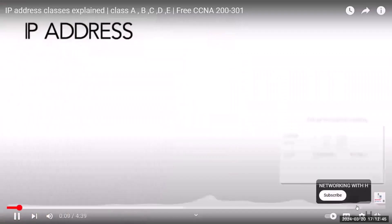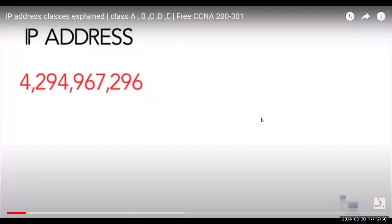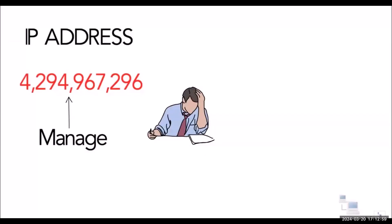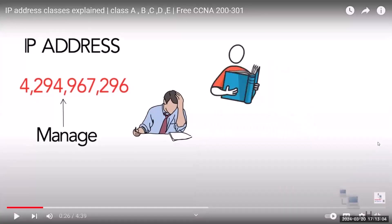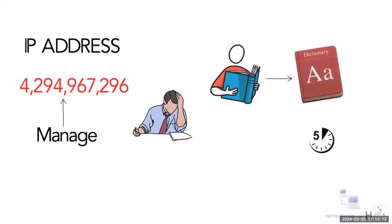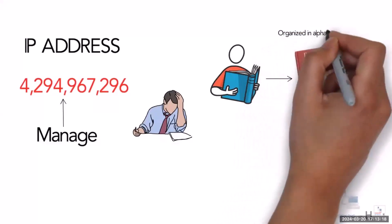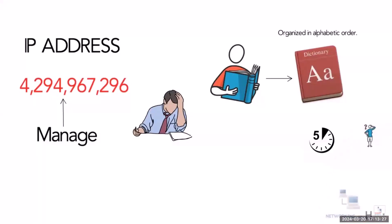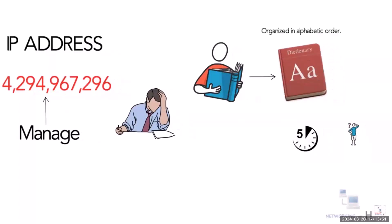There are around 4.3 billion IPv4 addresses. Managing all those addresses without any scheme is next to impossible. If you have to find a word from a language dictionary, you will take less than 5 minutes because words are organized in alphabetical order. But if the dictionary has no order, it may take up to one week. Suppose how nearly 4.3 billion addresses will make a search task complicated if they are unorganized.